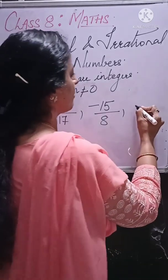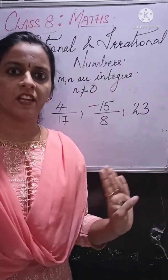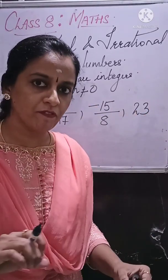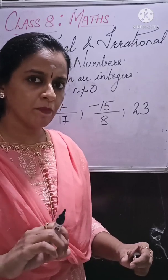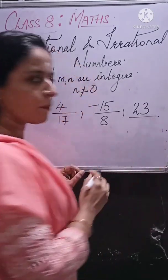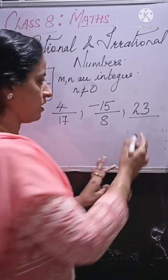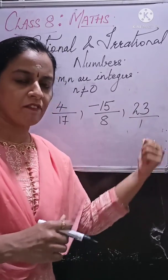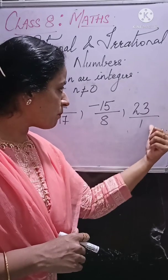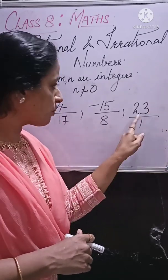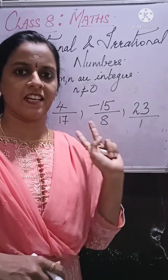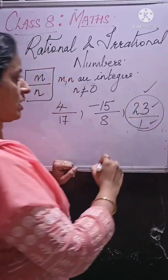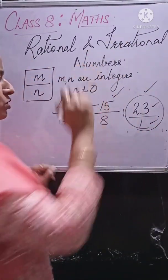Next example: 23. Can this be written in M upon N form? If there is nothing in the denominator, 1 is present there. So 23 means it is actually 23 upon 1. Check: 23 is an integer, 1 is an integer — so 23 is also a rational number.